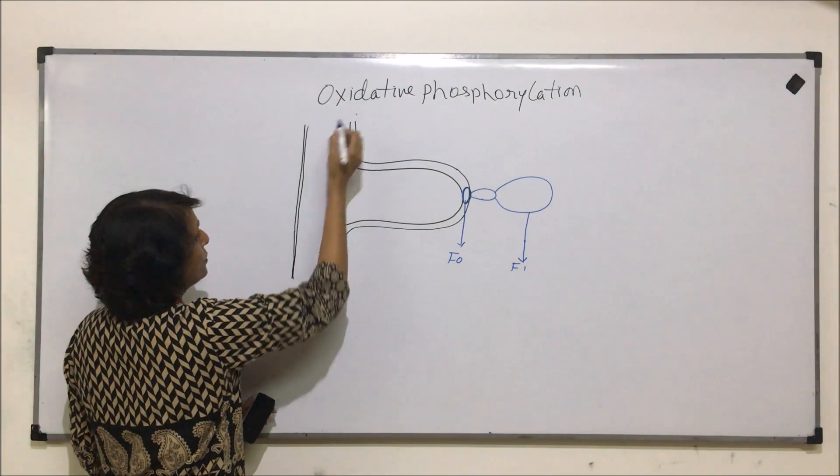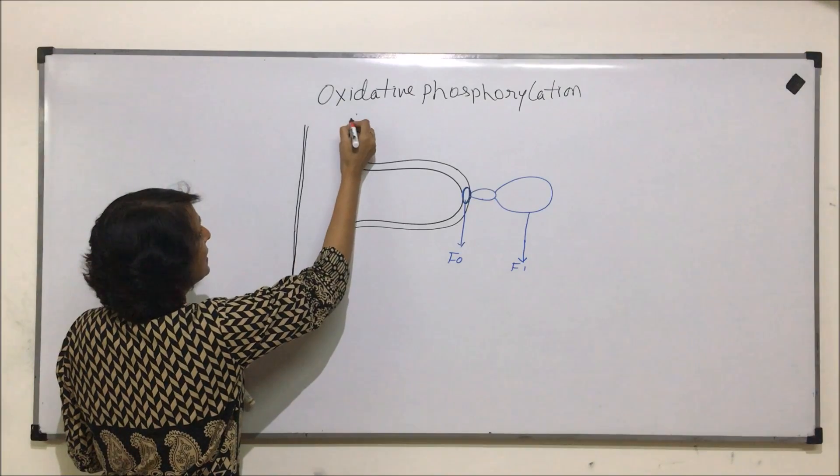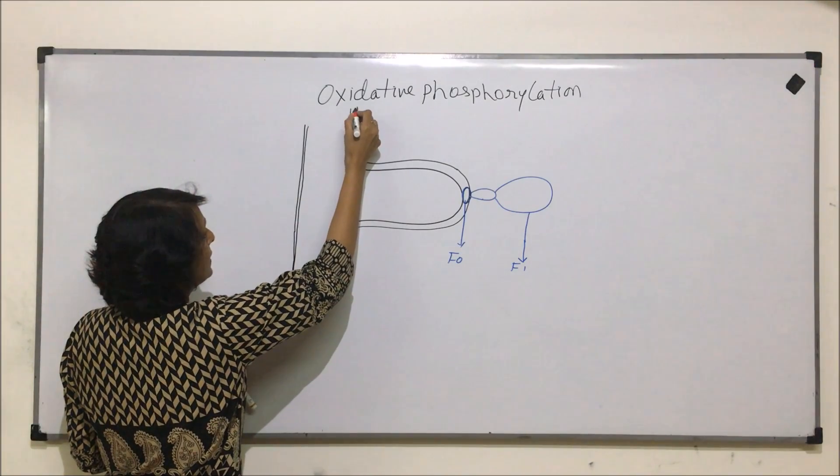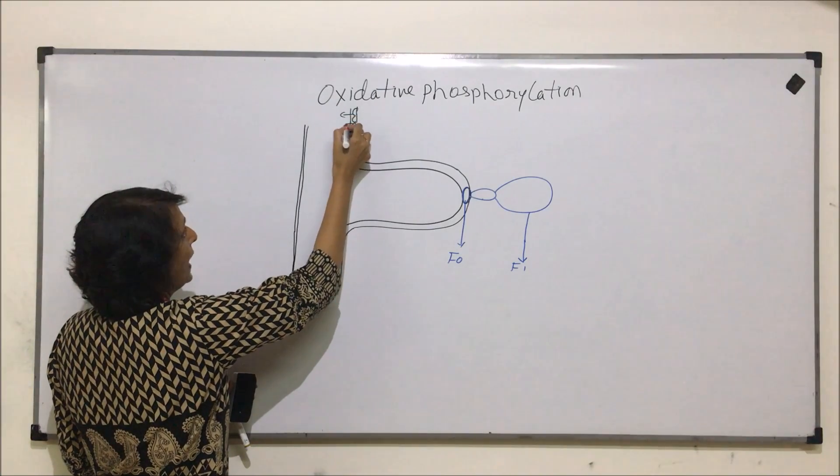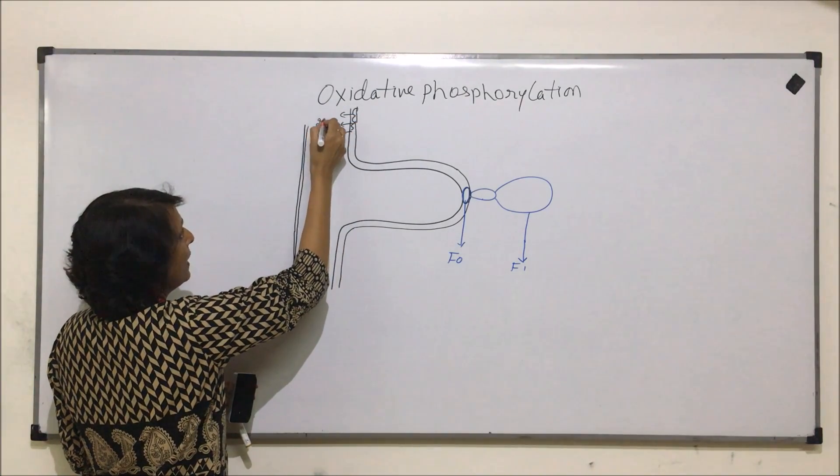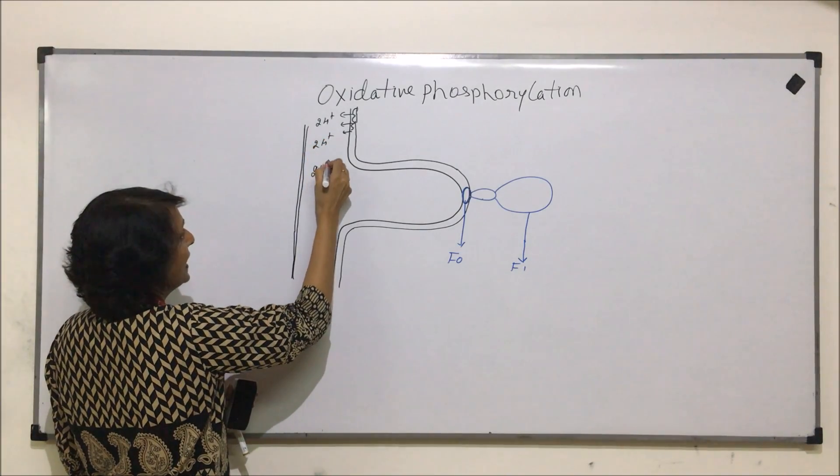Now, if electron transport chain was taking place here in this membrane, that means electrons were moving here and at various places,